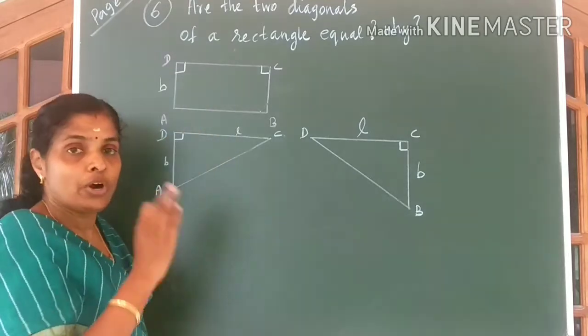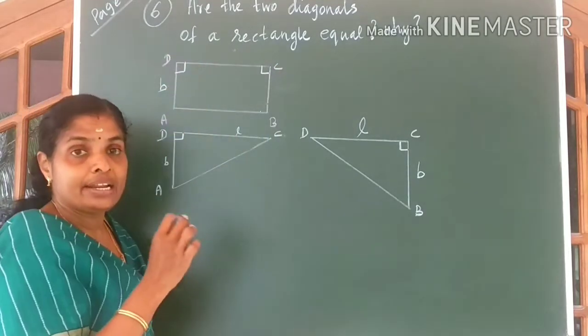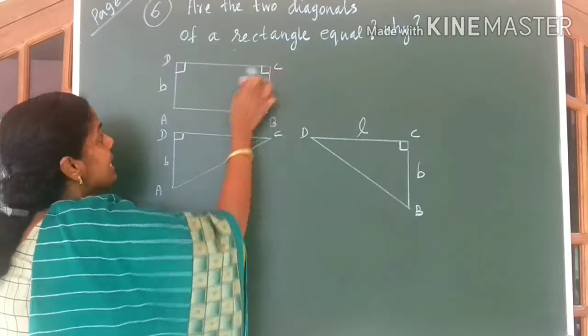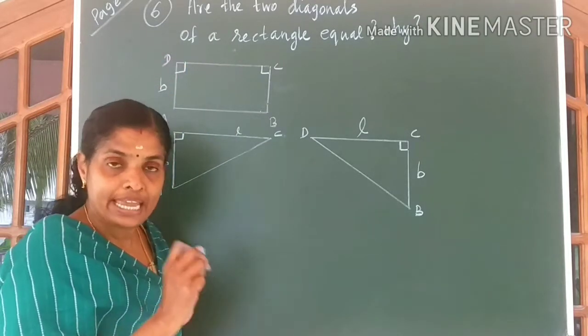In a rectangle, what do you know? AB and CD, they are the length of the rectangles. They are always equal. Also, BC and AD are the breadth of the rectangles. They are also equal.